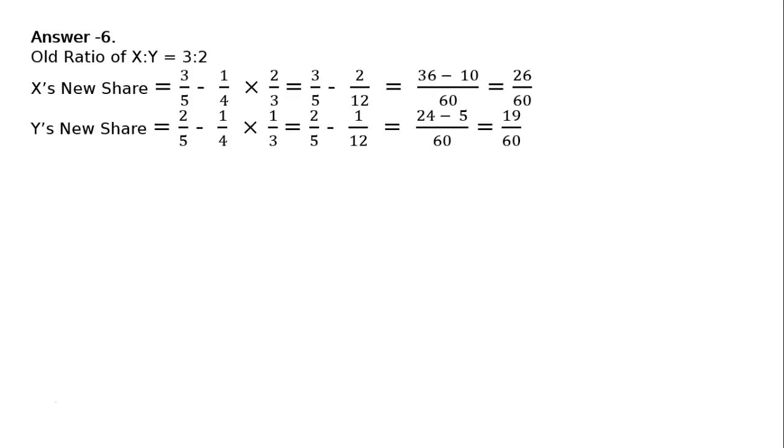Likewise, Y's new share is equal to old share is 2 upon 5 minus Z's share is 1 by 4. This one-fourth share, Z is taking from X and Y in the ratio of 2 to 1. Hence,